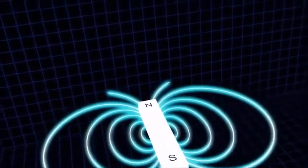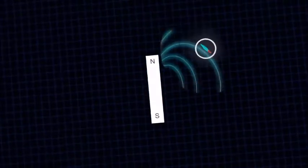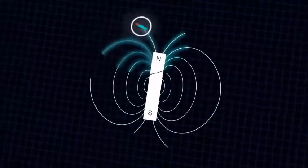If you take the filings away, you can still get an idea of what the field looks like by flying a tiny compass around the magnet. The compass points in the direction of the magnetic field, allowing you to draw its shape.